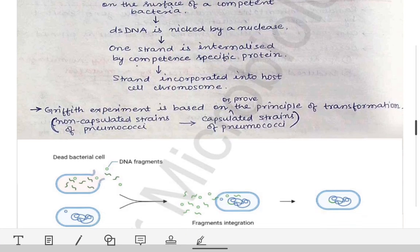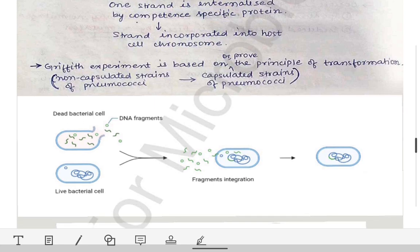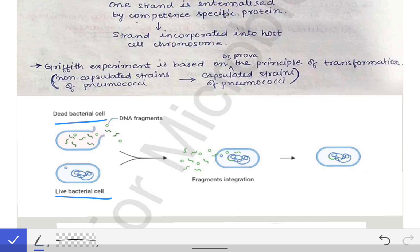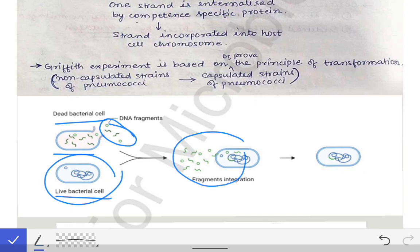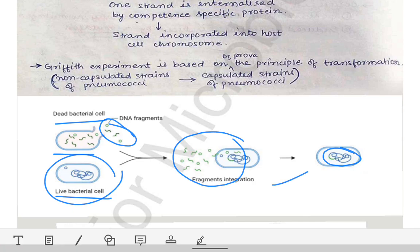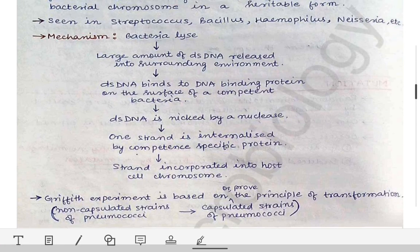Once you see the diagram, you will understand the process of transformation clearly. Here we have a dead bacteria and a live bacteria. After the death of that bacteria, the DNA fragments are released into the surrounding of the live bacteria. The live bacteria then takes up these DNA fragments and incorporates them into its own DNA.